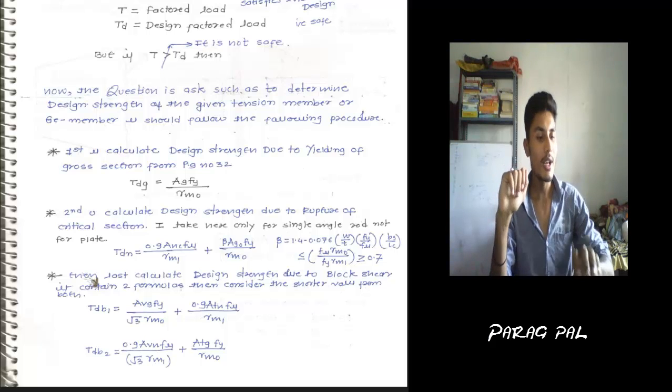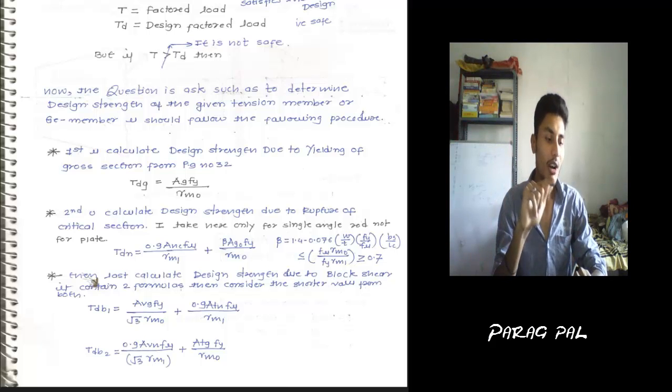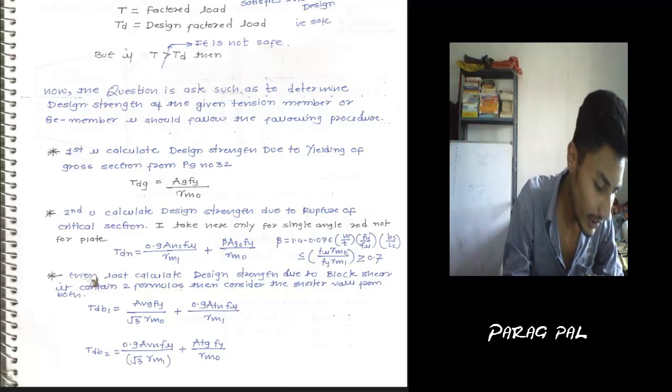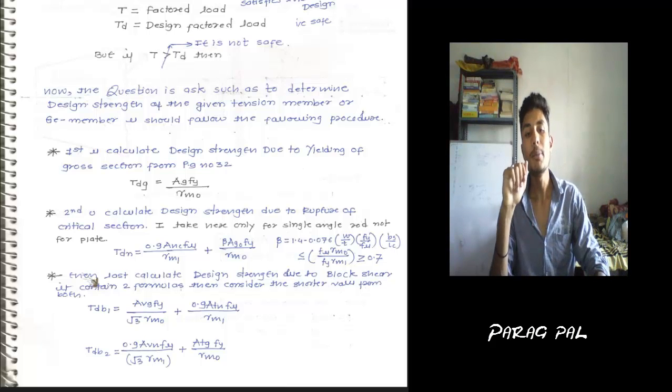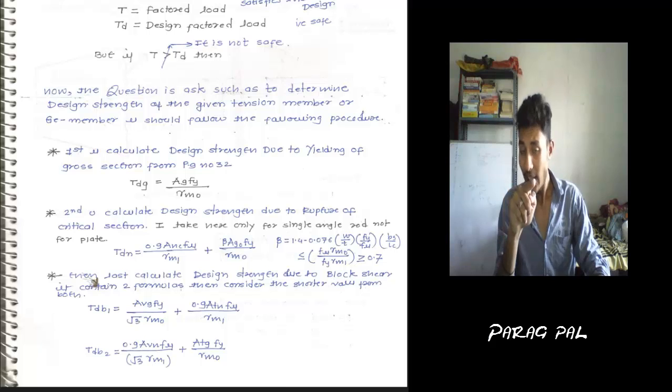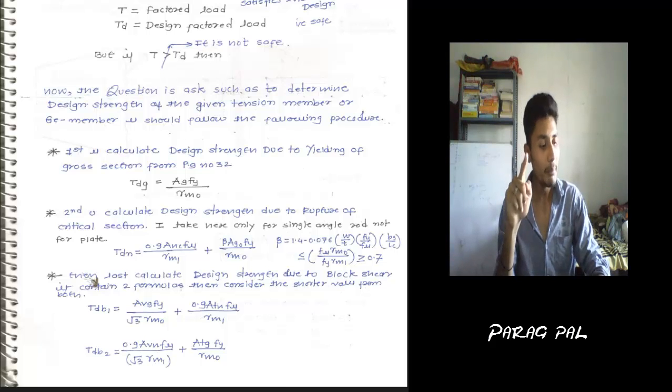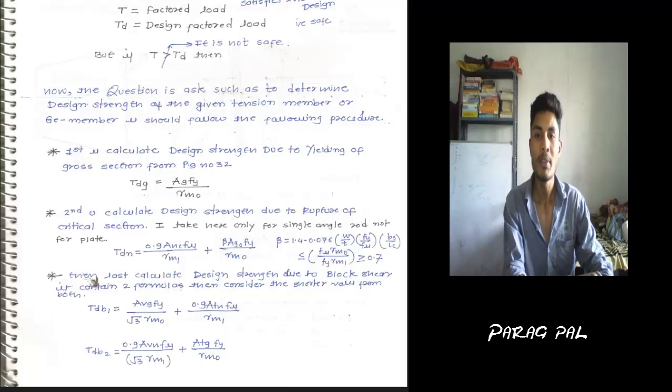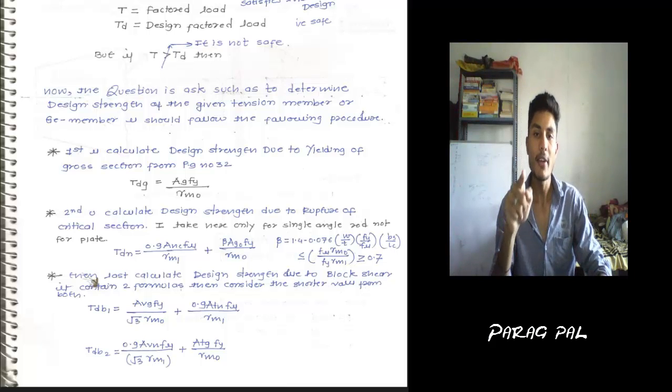It contains two formulas, always known as TDB1 and TDB2. Not in the IS code - you have to be clear that TDB1 and TDB2. Why are we calculating all these values? In the second, there is a value of beta. The beta formula is also posted here, and the relation is given there. You have to satisfy this relation. Then and only then, the TDN is getting some value here.